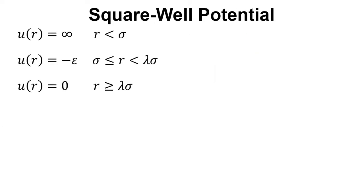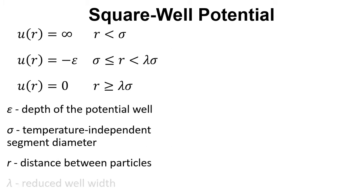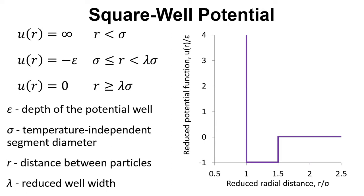Another approach has been the square well potential. Again, we've got these parameters, but we've also got lambda, the reduced well width. We can see here that this has been plotted for us. We've got a lambda of 1.5 times sigma here, and this is just a very crude and basic shape that tries to model the Lennard-Jones potential. I've overlaid the Lennard-Jones potential model there to just show that, and it's a way of making the maths simpler by just having this crude approximation.